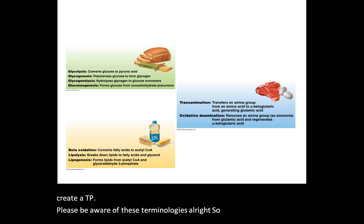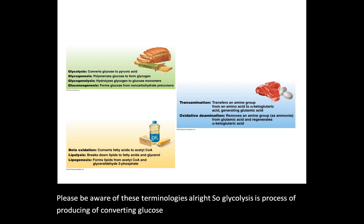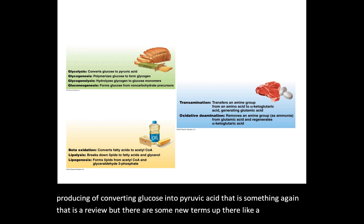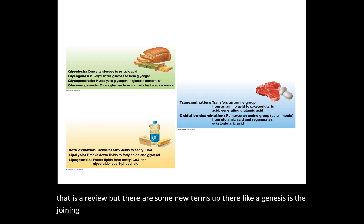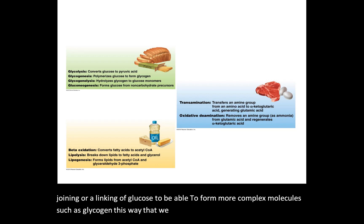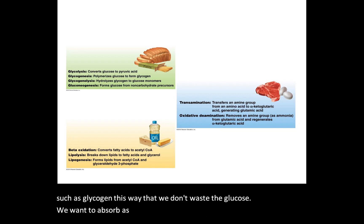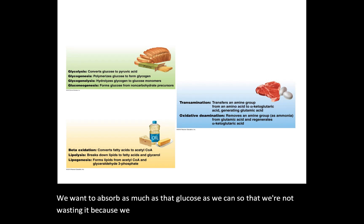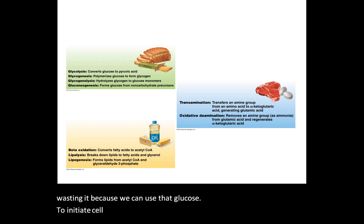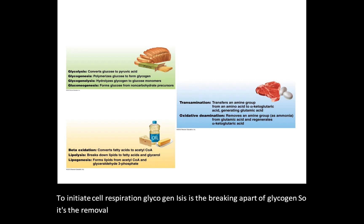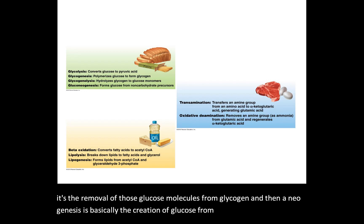Glycolysis is the process of converting glucose into pyruvic acid. Glycogenesis is the joining or linking of glucose to form more complex molecules such as glycogen — this way we don't waste glucose. We absorb as much glucose as we can so we can use it to initiate cellular respiration. Glycogenolysis is the breaking apart of glycogen — the removal of glucose molecules from glycogen. Glyconeogenesis is essentially the creation of glucose from non-carbohydrate sources.